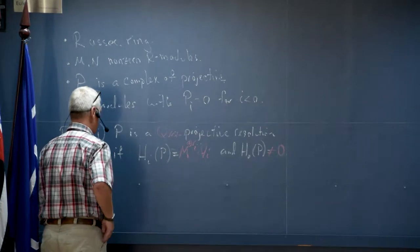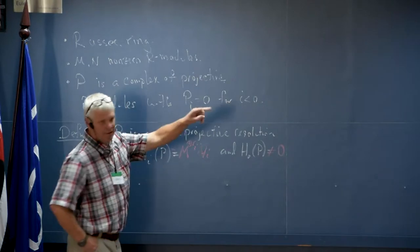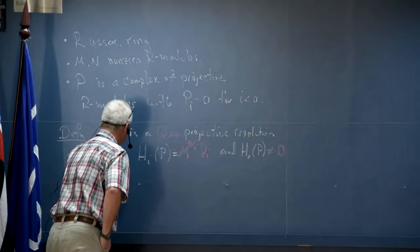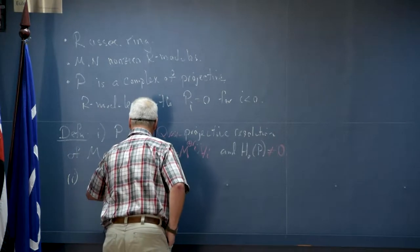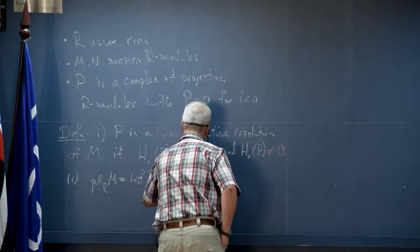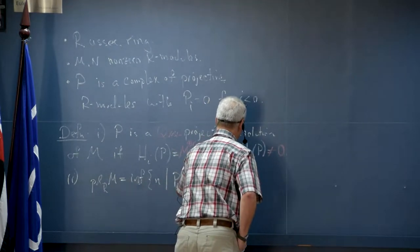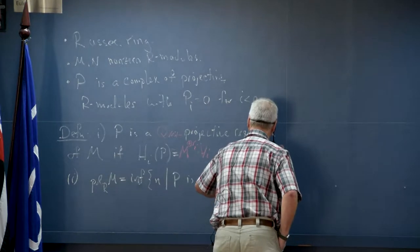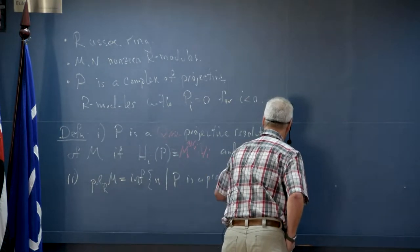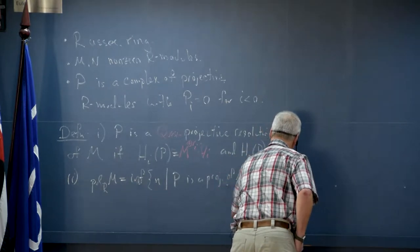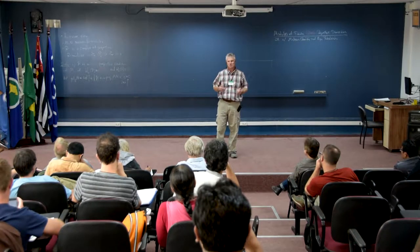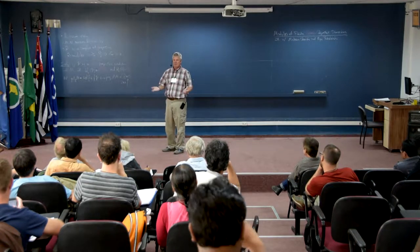The projective dimension of an R-module M is the infimum over all N such that P is a projective resolution of M with P sub i equal to zero for i greater than N. So you look at all finite projective resolutions and take the shortest one — that's the projective dimension. Of course, if there is no finite projective resolution, then you set that to be infinity.